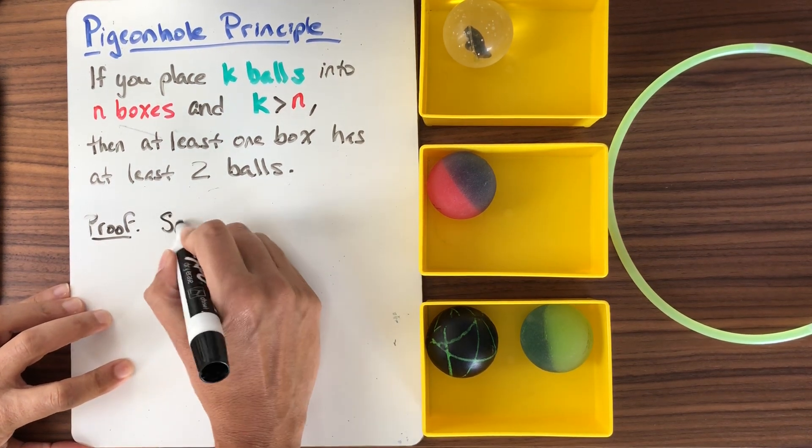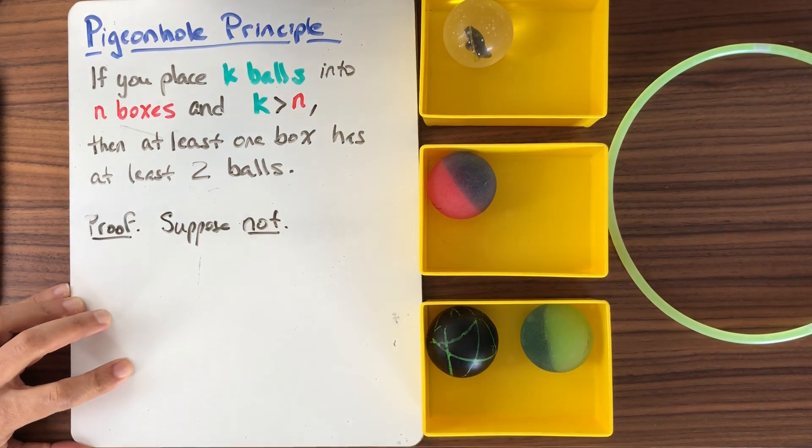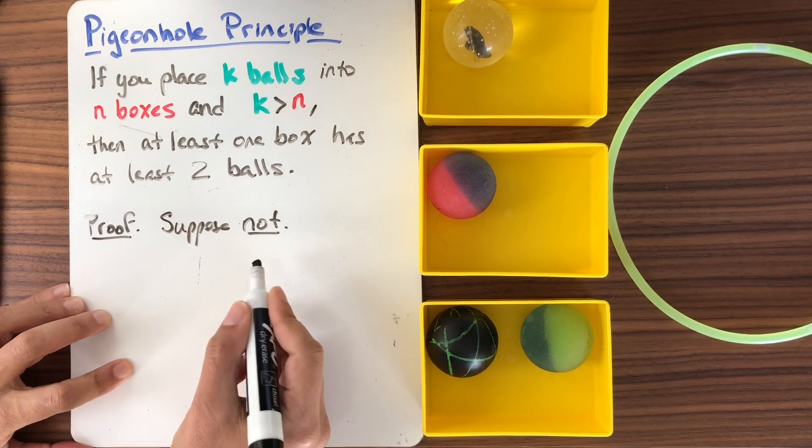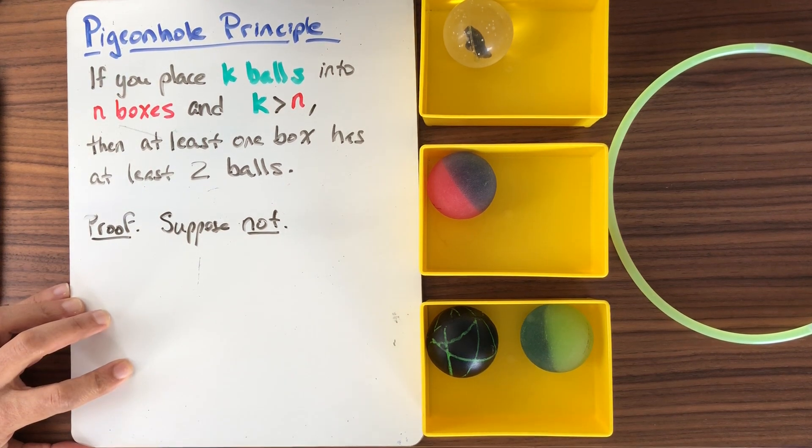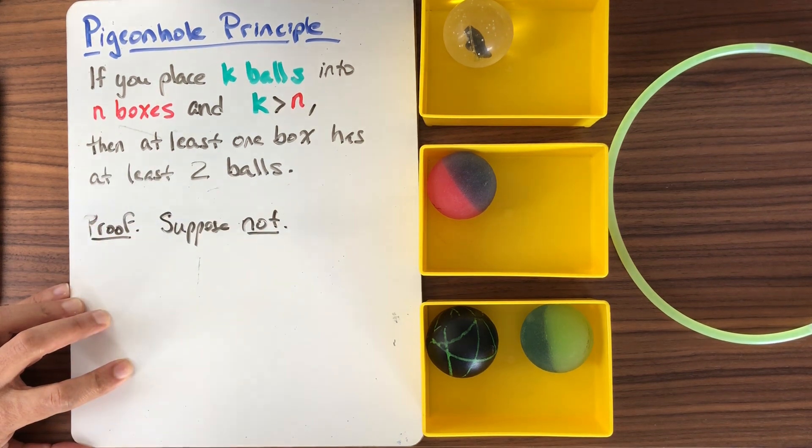So here, what we're going to do is we're going to suppose not. When something is so obvious that it just has to be true, suppose it's false. What does that mean to say suppose not? Not what? Well, not means I say the conclusion is false.